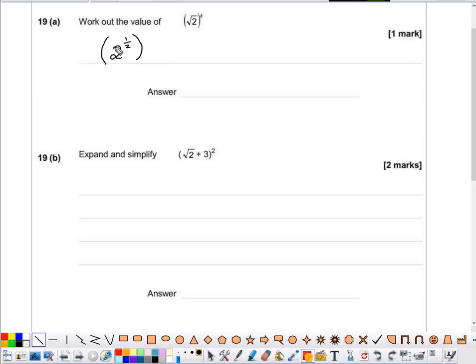So in this situation, we've now got 2 to the power of a half multiplied with the index of 4. If you have two indices that go across a bracket, we can multiply those two values together, which would give us a simplified version of the question to 2 squared.